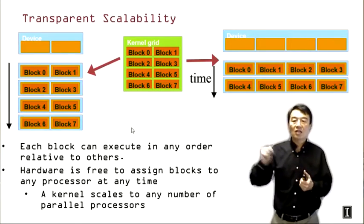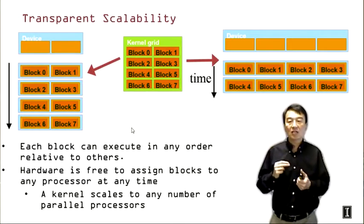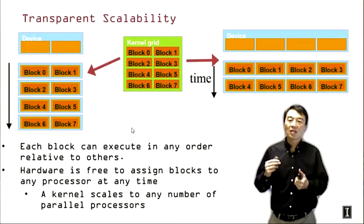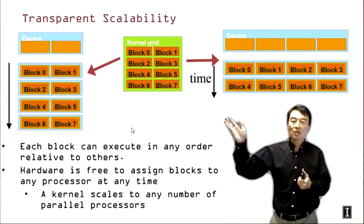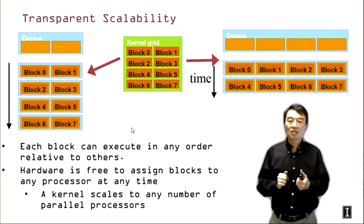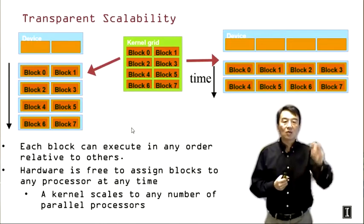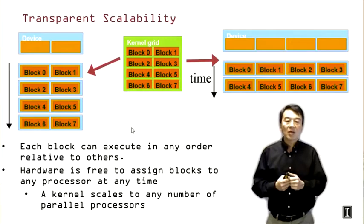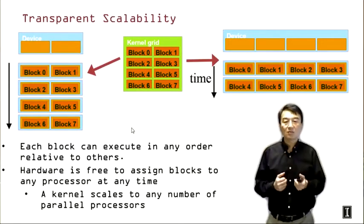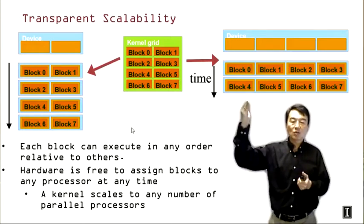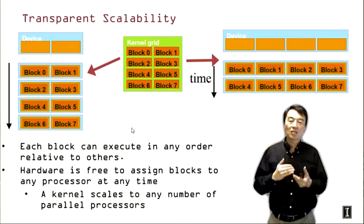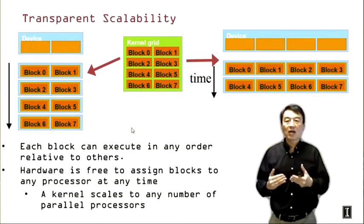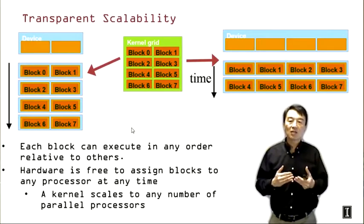On the left-hand side we have a device with fewer execution resources — say two execution resources — and we can schedule two thread blocks per time unit, requiring four time units to execute all eight thread blocks. On the right-hand side we show a device with four execution resources, twice the amount, and we can execute four thread blocks per time step, needing only two time steps. With more execution resources we use less execution time; with fewer execution resources we use more. This is the concept of scalability.